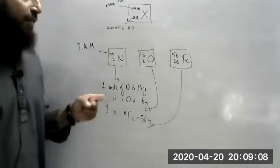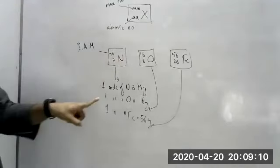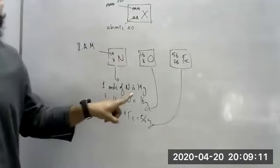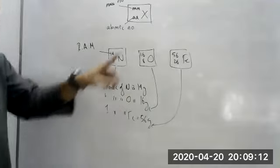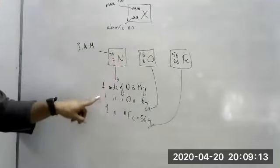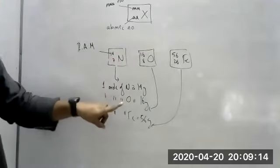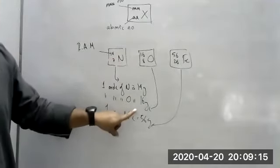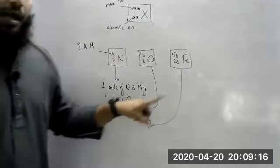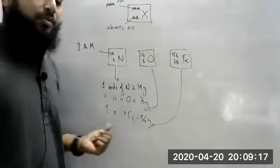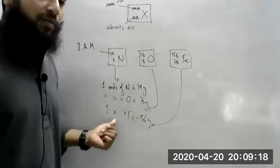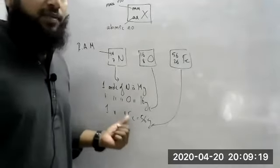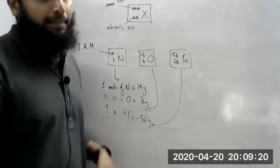If it's nitrogen, one mole of nitrogen will be 14 grams. If it's oxygen, one mole of oxygen is 16 grams. And if it's iron, one mole of iron is 56 grams.